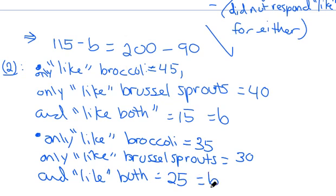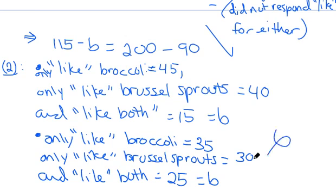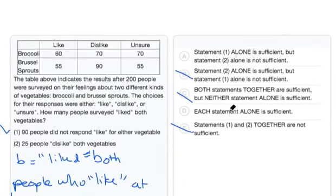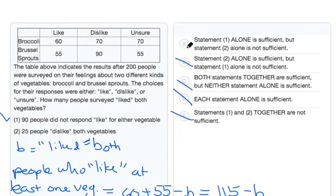In both scenarios, 25 people dislike both vegetables because they're not affected by these breakdowns. We have two different scenarios where B takes different values, but everything is still satisfied in terms of our table and categories. So regardless of 25 people disliking both vegetables, B could take multiple values. Because of that, statement two alone is not sufficient. We can eliminate answer choice D, and the correct answer is choice A — statement one alone is sufficient, but statement two alone is not sufficient.